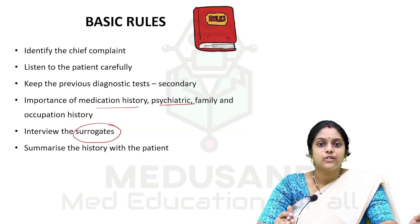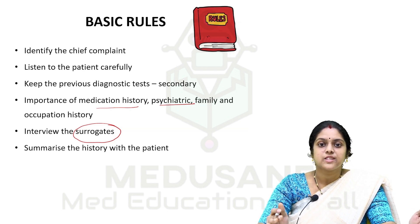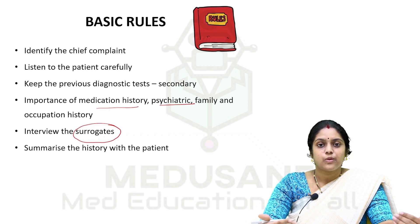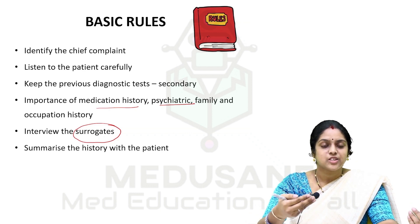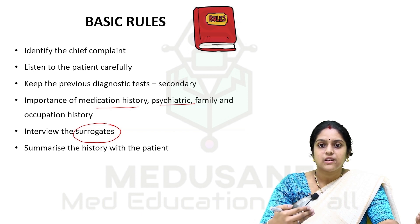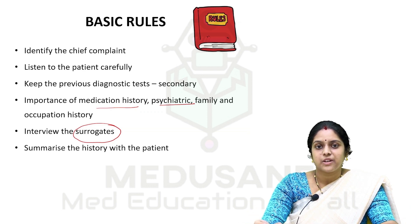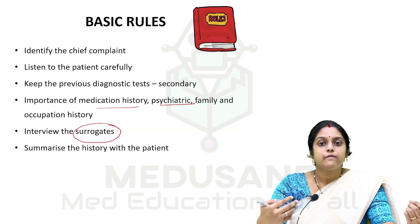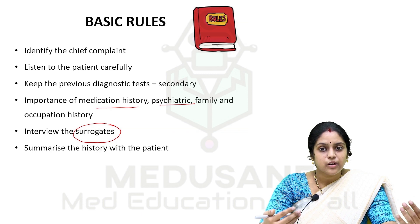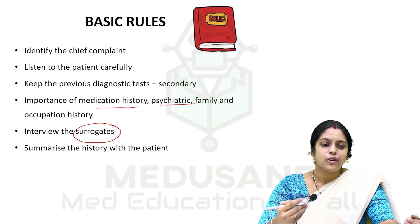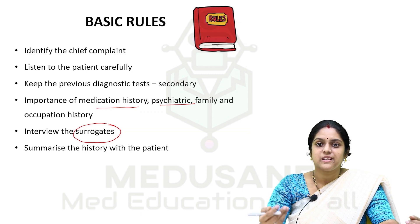At the end of taking a thorough history, we must summarize the history with the patient. Tell the patient: this is what you have told me and this is what I have understood. When you do this, the patient feels that you understand their complaints. They will feel more confident in trusting you and will come forward with all their complaints without any inhibitions. Developing a good rapport — talking patiently and summarizing history at the end — is very important.